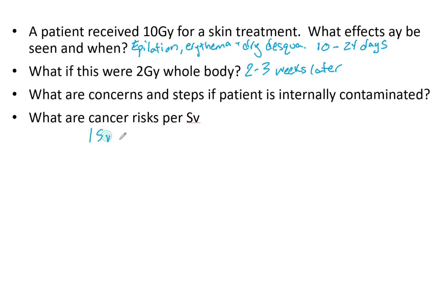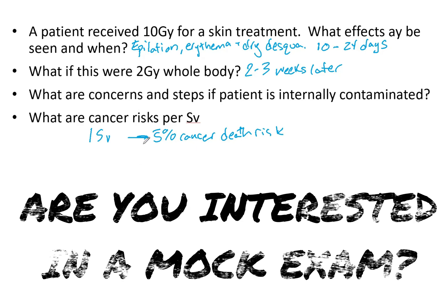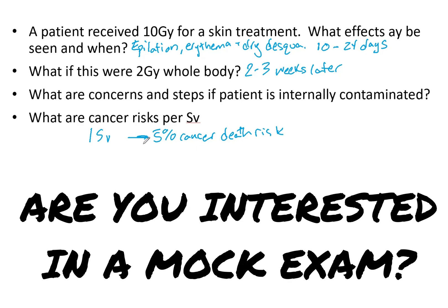What are the cancer risks per sievert? One sievert has a 5% cancer death risk. It's good to just know these right off the top of your head. This is radiobiology — it's one of the categories within ABR Part 3, so you never know when it may be handy.